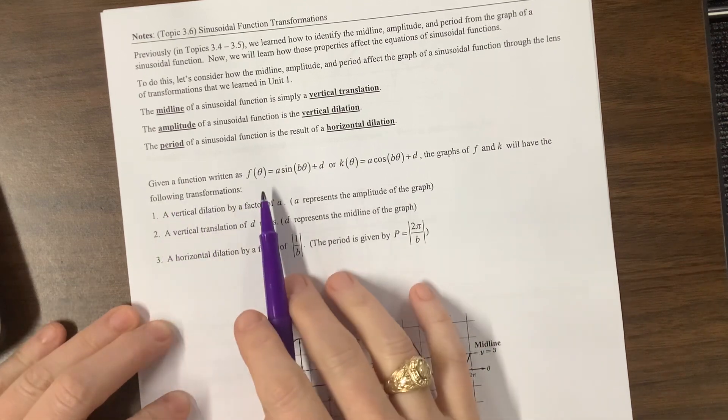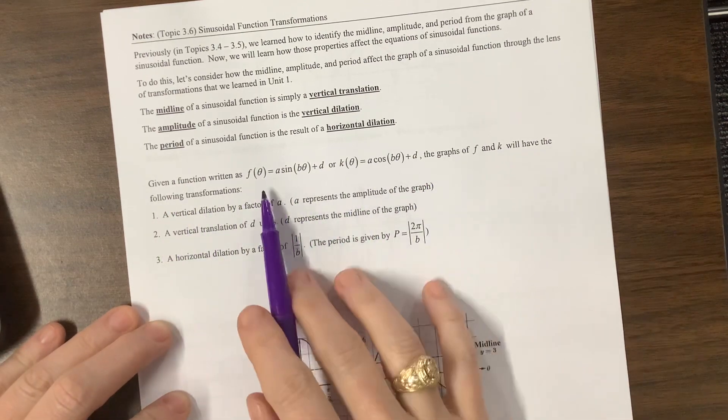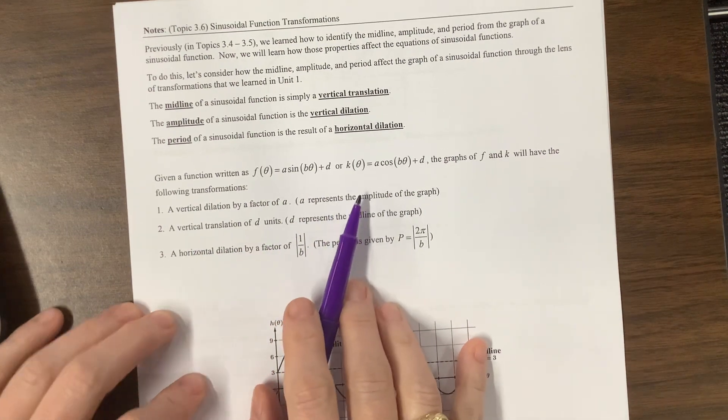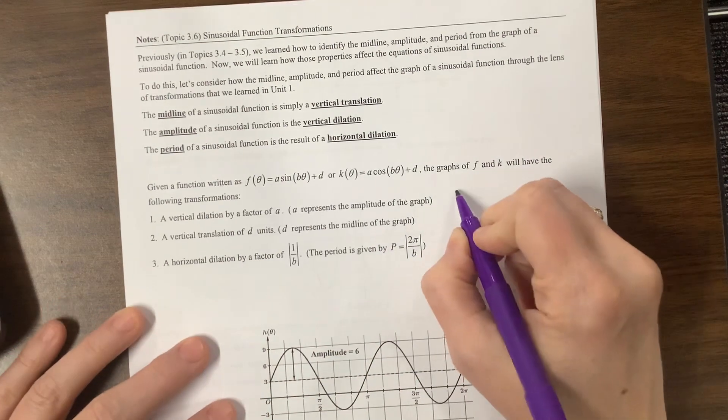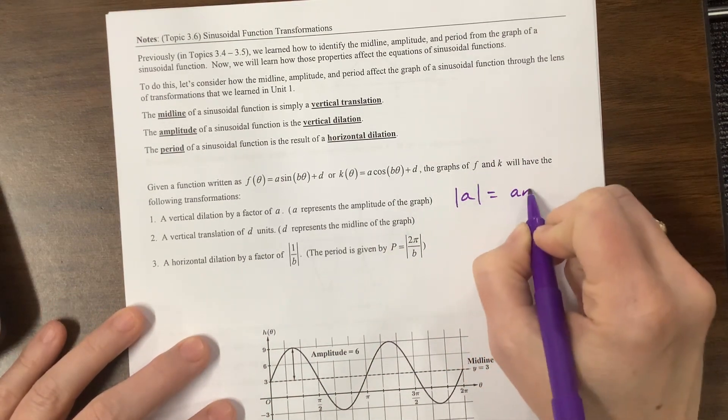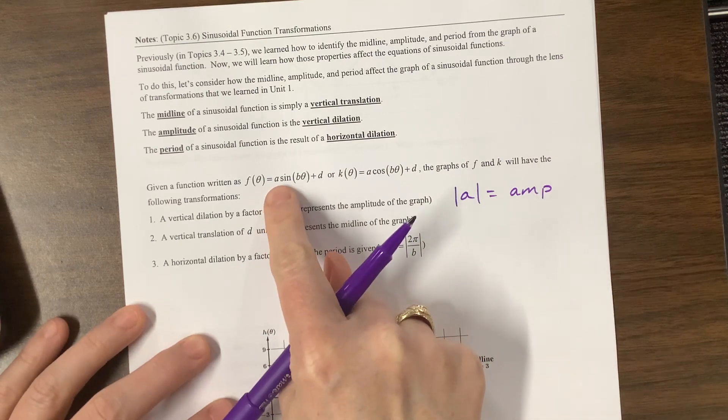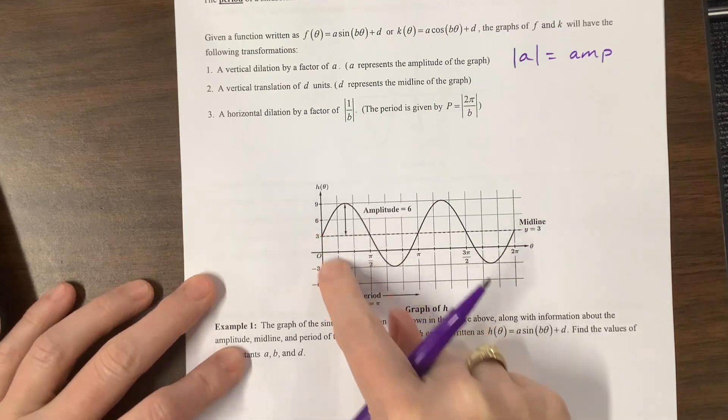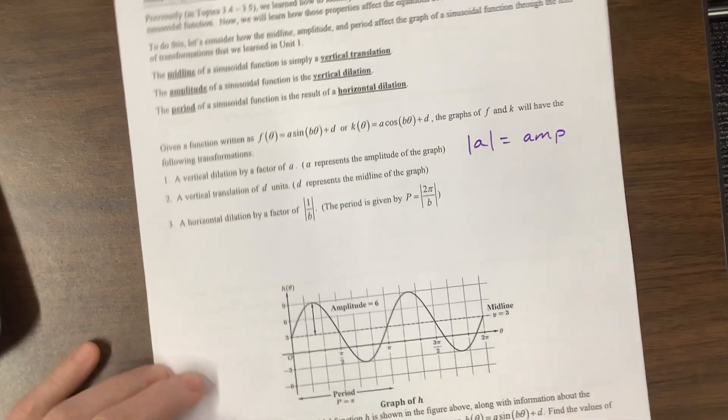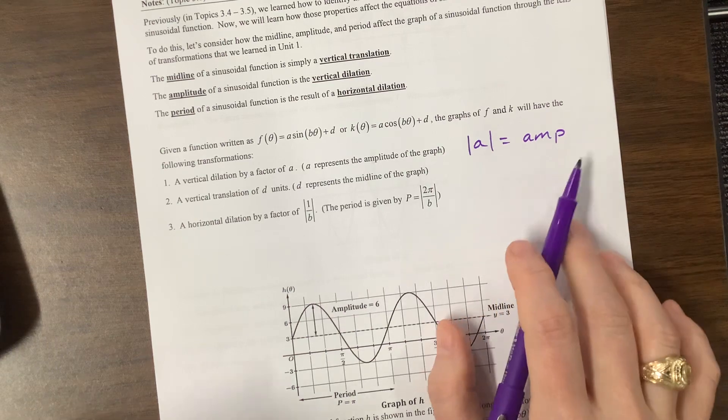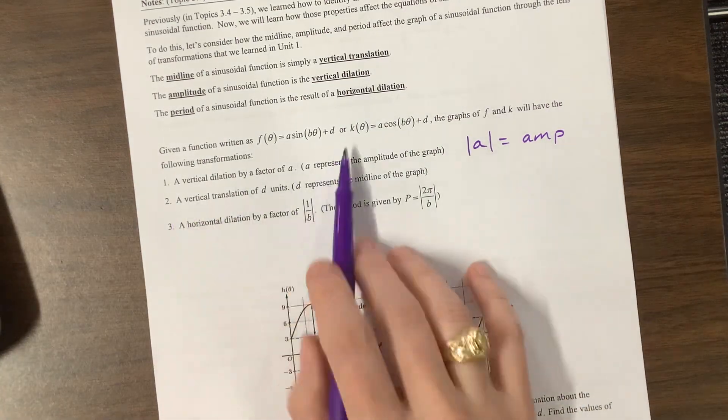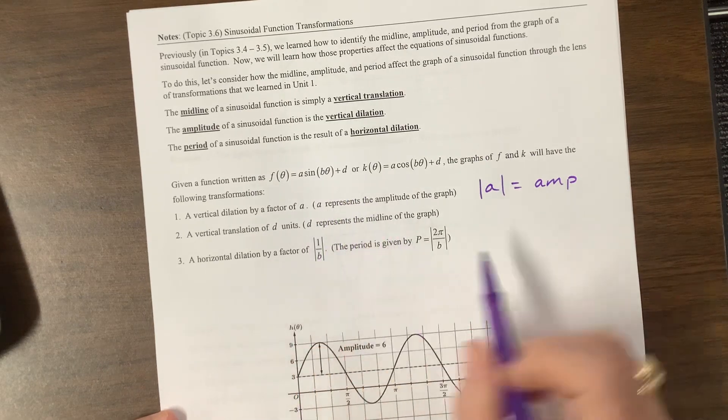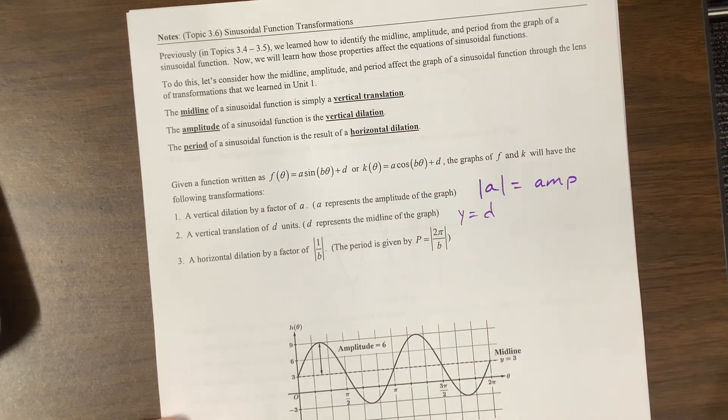Given a function, if we have this function, either sine or cosine, we'll have the vertical dilation will be a factor of a. He says a represents the amplitude of the graph. I would argue that the absolute value of a equals the amplitude, because if I make a negative, then what that will do is instead of going up first with my curve, I would go down first. But I don't know to what extent AP will consider this. A vertical translation of d units is going to shift us up or down d, and then d represents the midline. So I would say that y equals d is the midline of this graph.